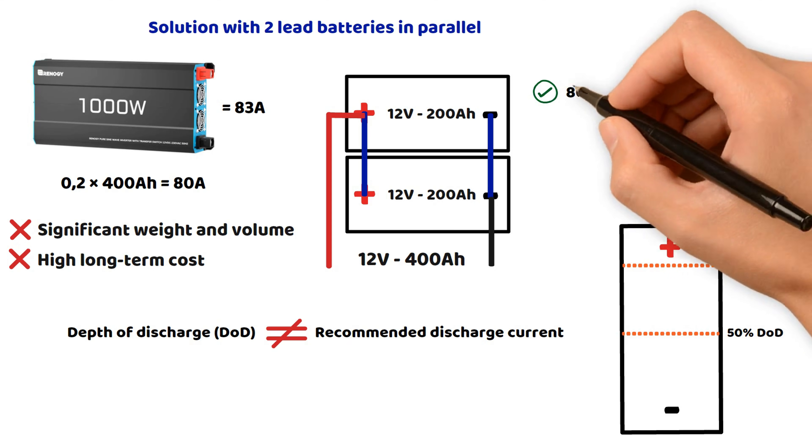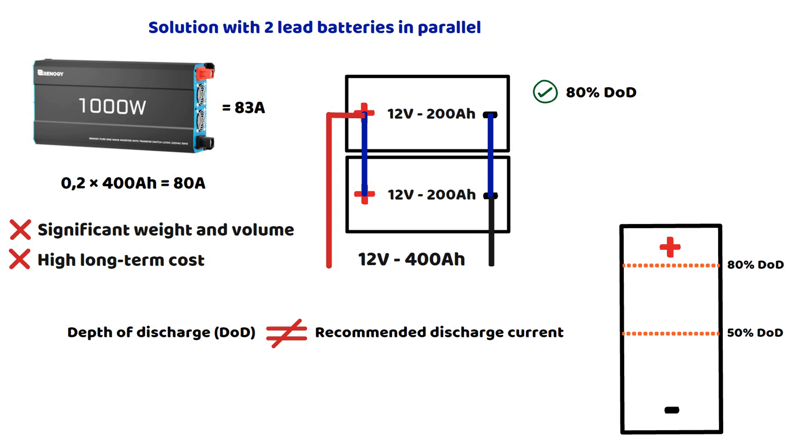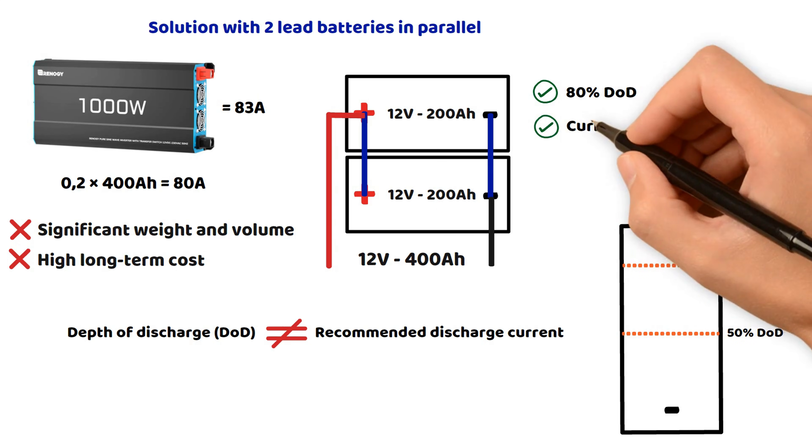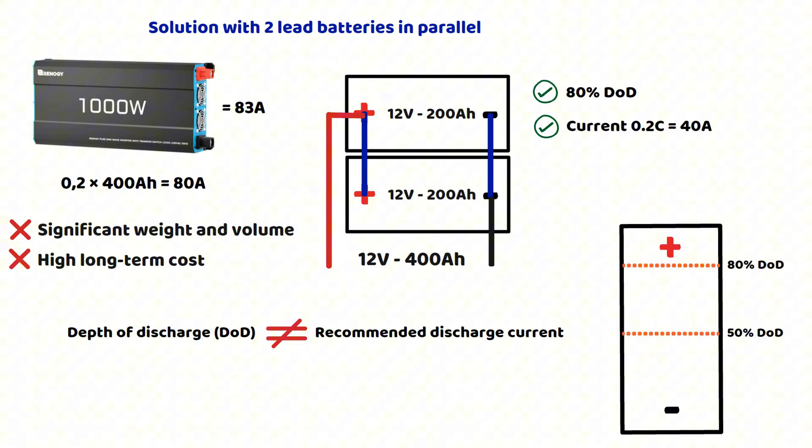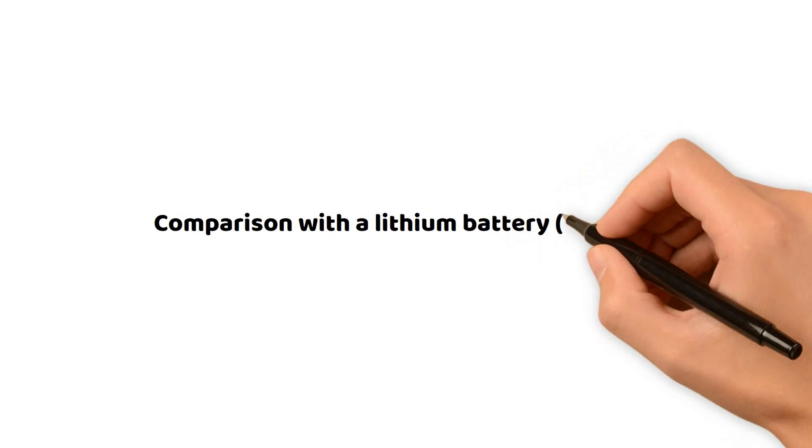And precisely with the lithium battery, it is perfectly possible to use a single battery. A lithium battery with a capacity of 200 ampere hours easily supports 83 amperes of discharge current with a battery management system rated at 200 amperes.